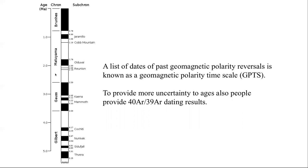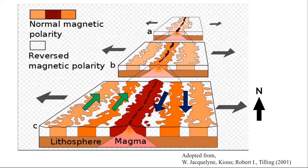The 5 million year polarity time scale includes the Brunhes normal polarity, Matuyama reversal, Gauss reversal, and Gilbert polarity chrons. Black strips represent normal polarity and white strips represent reverse polarity. Such an arranged time scale combining normal and reverse polarity intervals is known as the geomagnetic polarity time scale (GPTS). Argon-argon dating results have been reported by many researchers to provide age certainty to this GPTS.